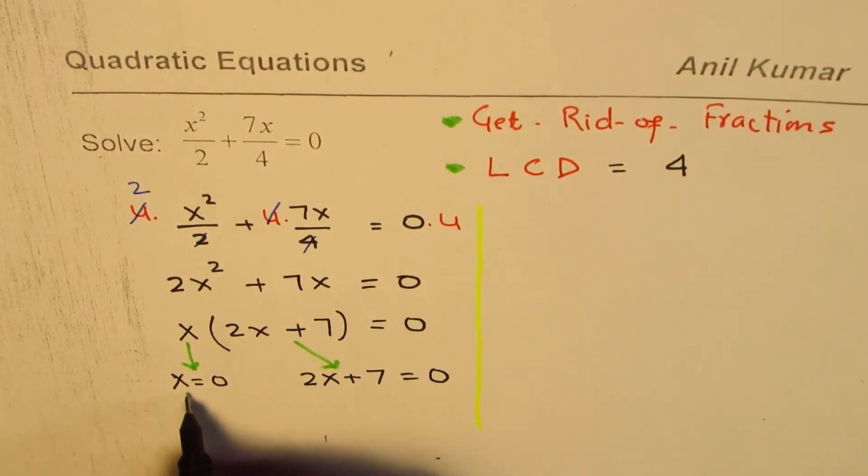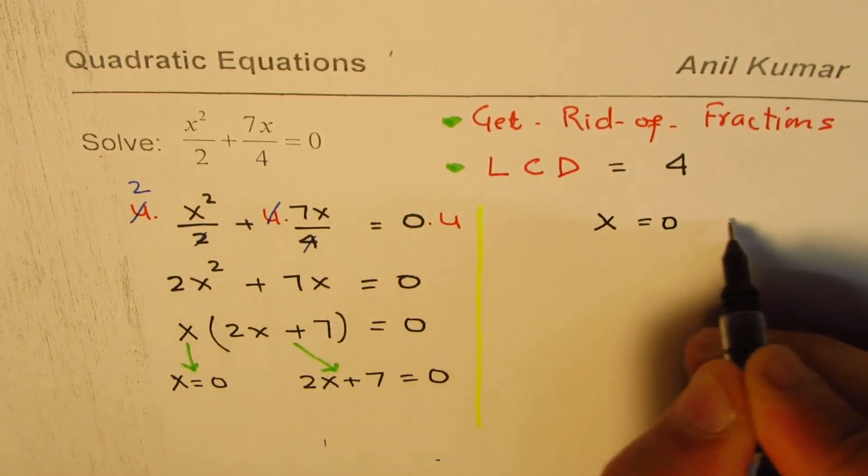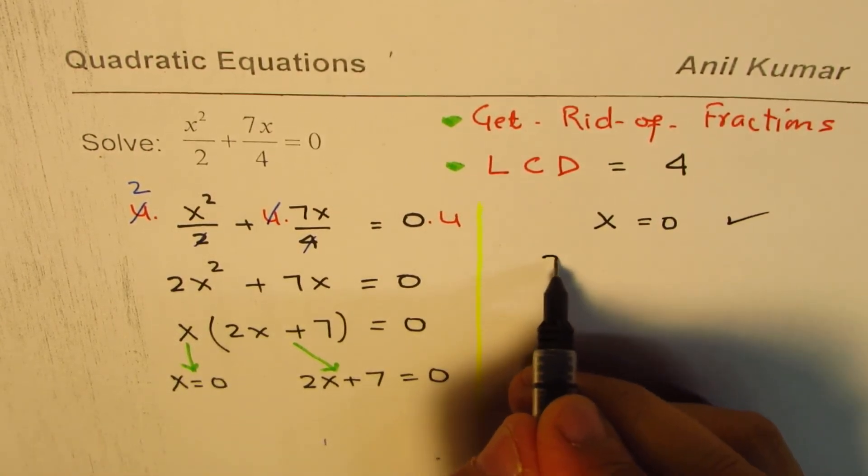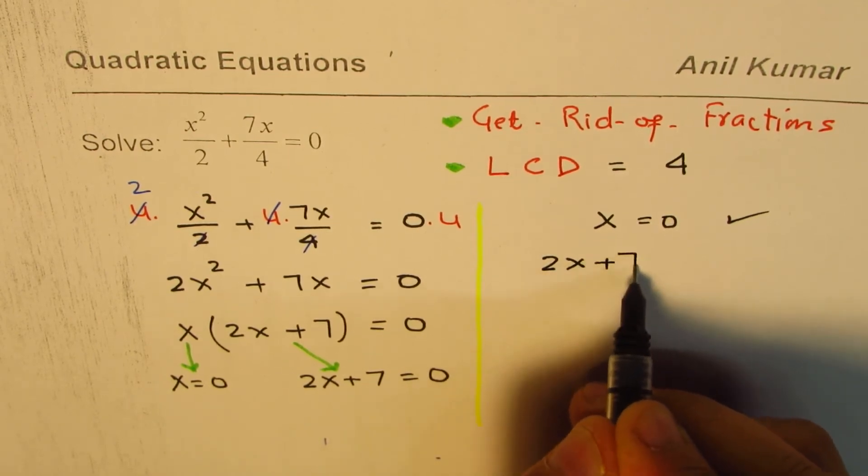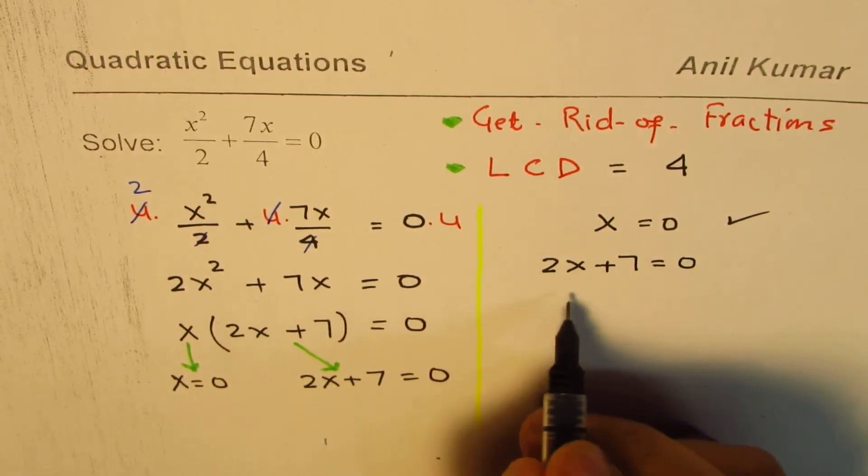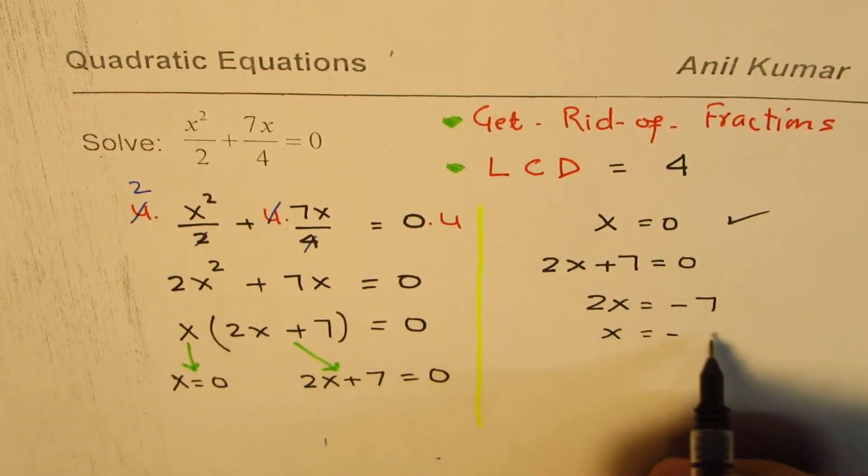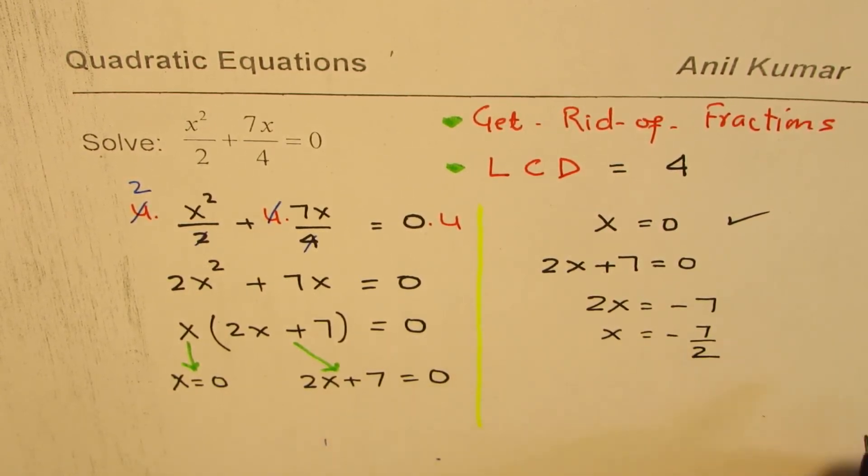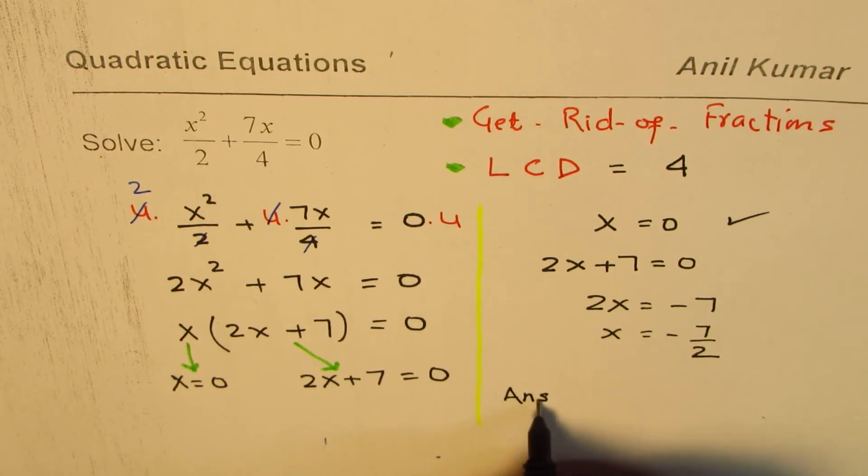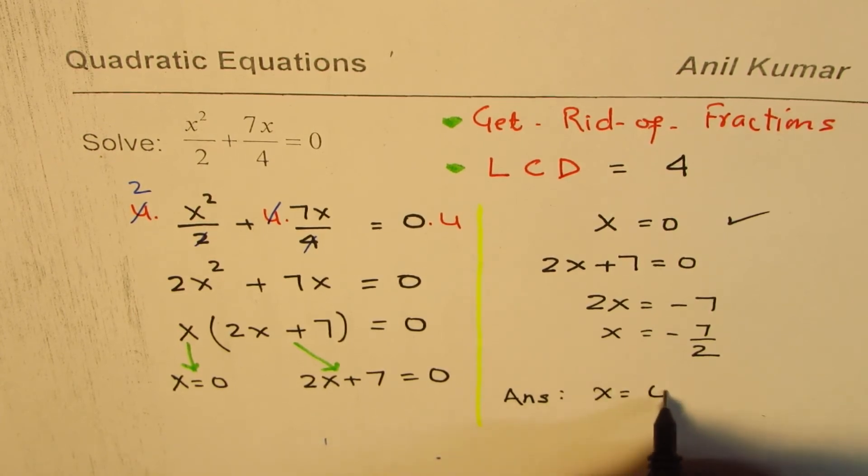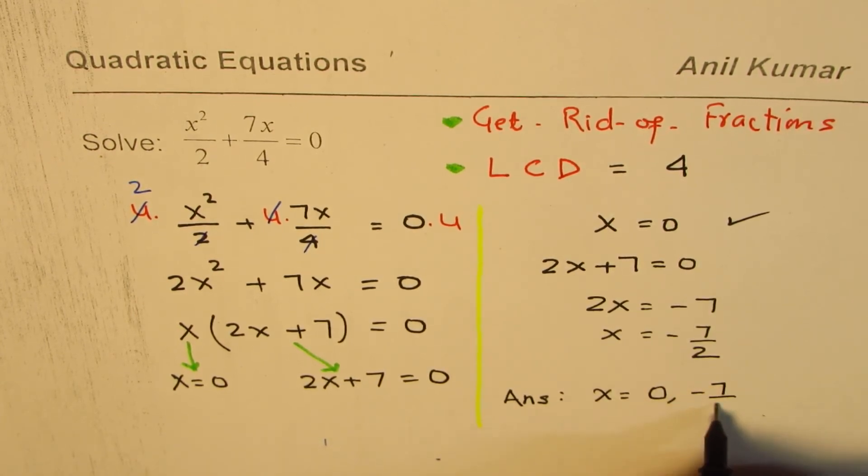So one solution is clear, x equals to 0. The other one is 2x plus 7 equals to 0. Rearrange. So we have 2x equals to minus 7, x equals to minus 7 divided by 2. So we have our answers, and they are x equals to 0 or minus 7 over 2.